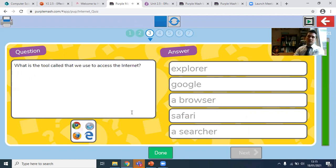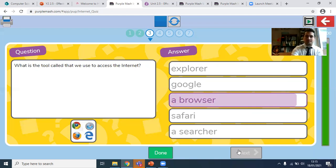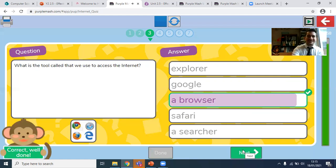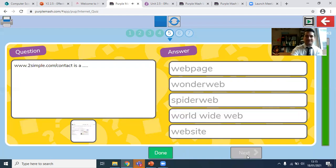The next one, what is the tool called that we use to access the internet? Now, this one is a tricky one. It's not Google, it's not Safari. The one we're looking for is it's a browser. That browser, and one of the browser's names is Google and Safari and Explorer. The next one here, www.twosimple.com is a website. We've talked about the idea that a website is like a book, and inside it are lots of web pages.